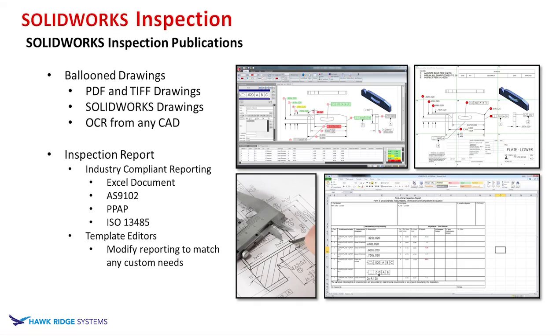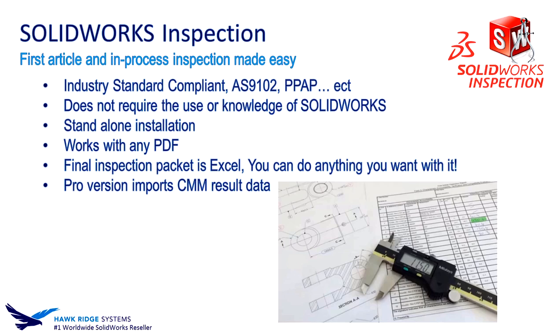SolidWorks Inspection is a first-article and in-process inspection tool that automates the creation of ballooned inspection drawings and the reports that go along with them. Inspection is fully industry-compliant with standards such as AS9102 and PPAP. No SolidWorks experience is required to use Inspection efficiently, as it works both inside of SolidWorks and as a standalone installation, working directly with any PDF without SolidWorks even being installed.